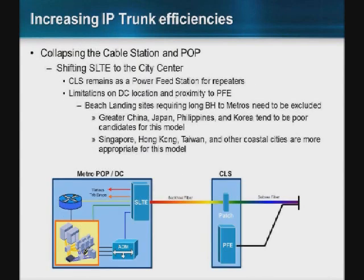From a submarine cable operator standpoint, we've been looking at ways to make it more efficient to bring international capacity into a particular market. One approach is collapsing the cable station and PoP — essentially moving capacity directly from the cable landing station into the metro, by shifting the SLT to the city center. In that scenario, the cable landing station remains just as a power feed station, possibly with a dry repeater to extend another 70 kilometers. Coastal cities like Singapore and Hong Kong are appropriate for this model, but countries with long distances between cable landing points and the city center, such as Korea and Japan, create technical feasibility issues.